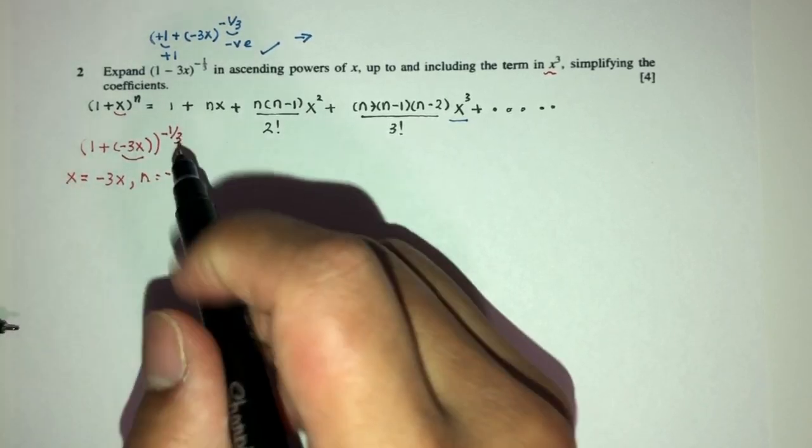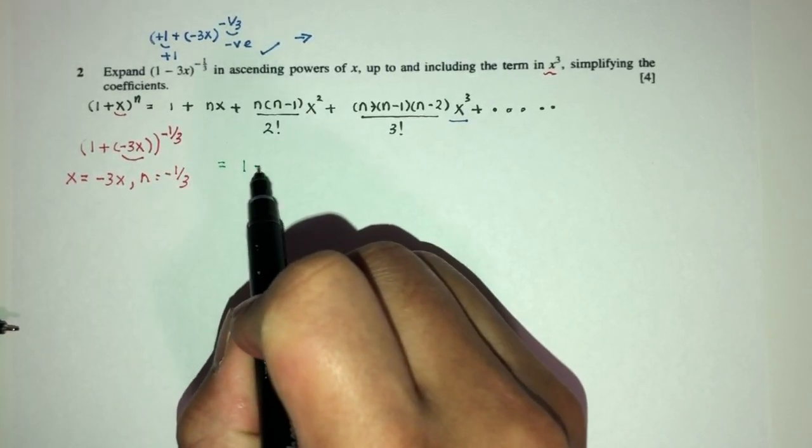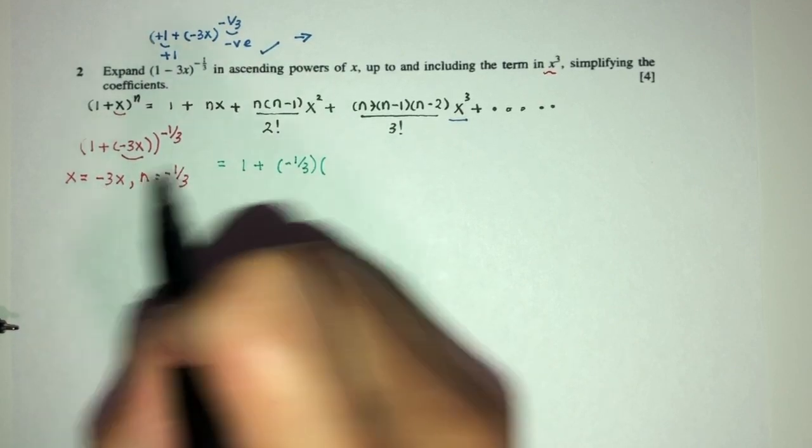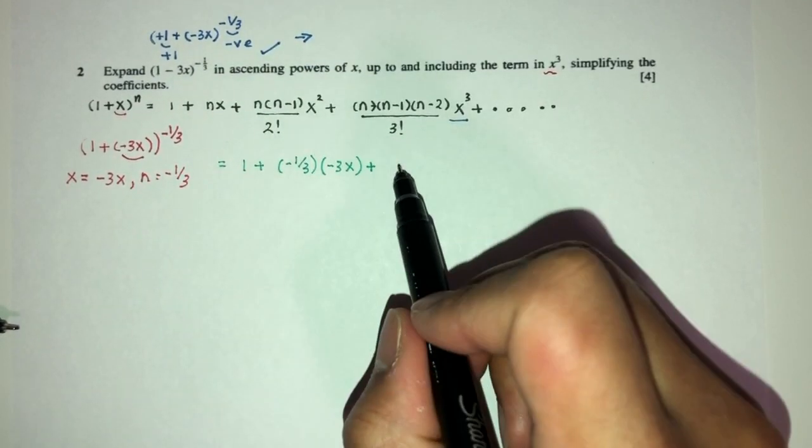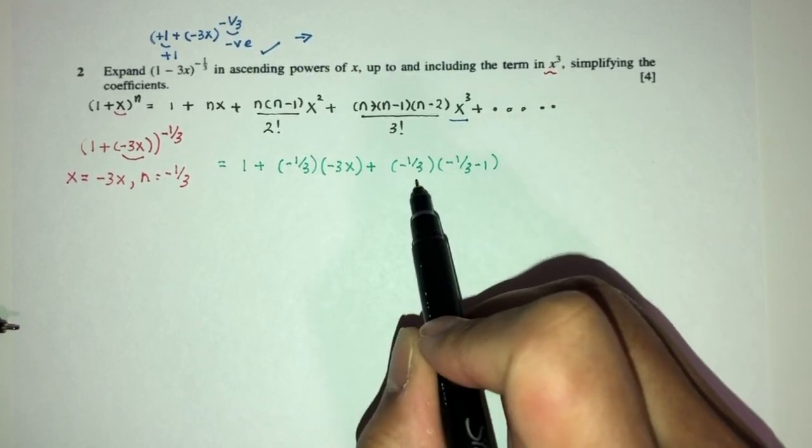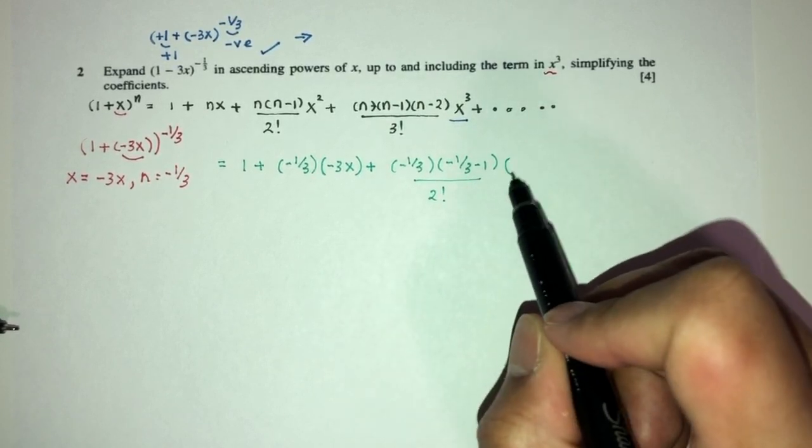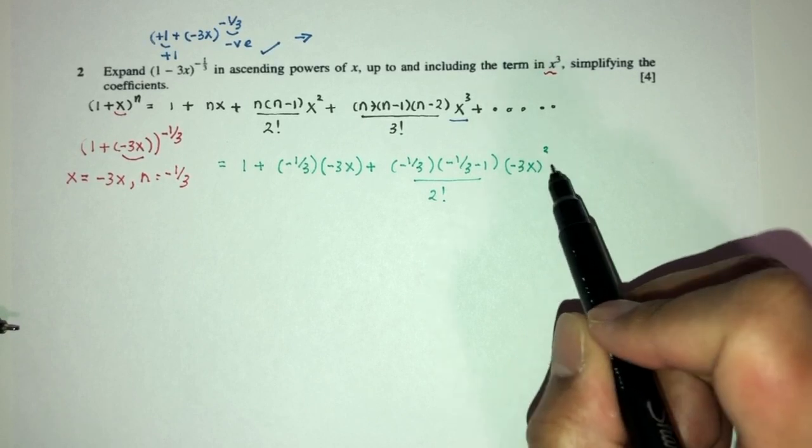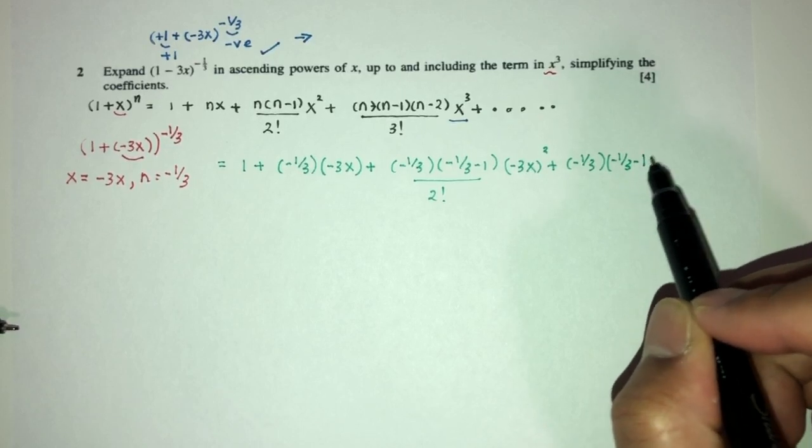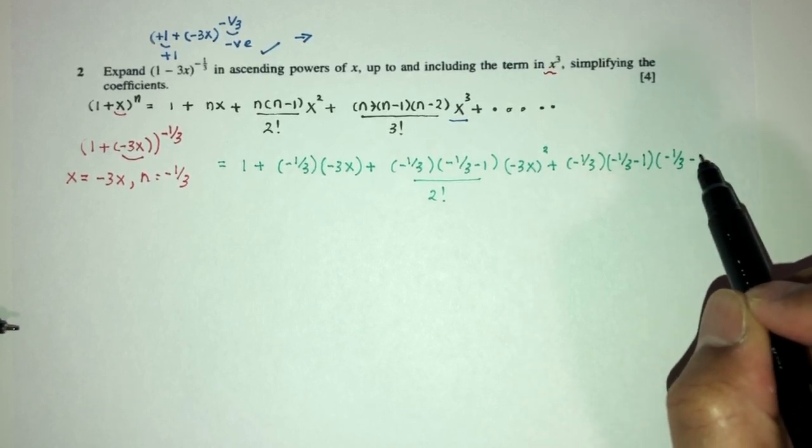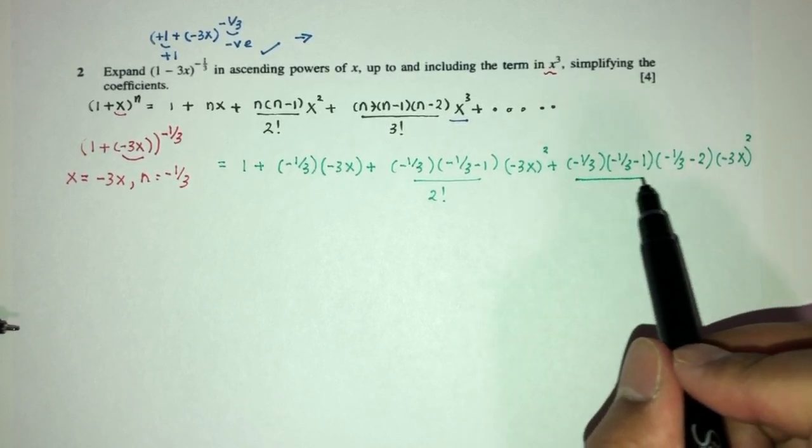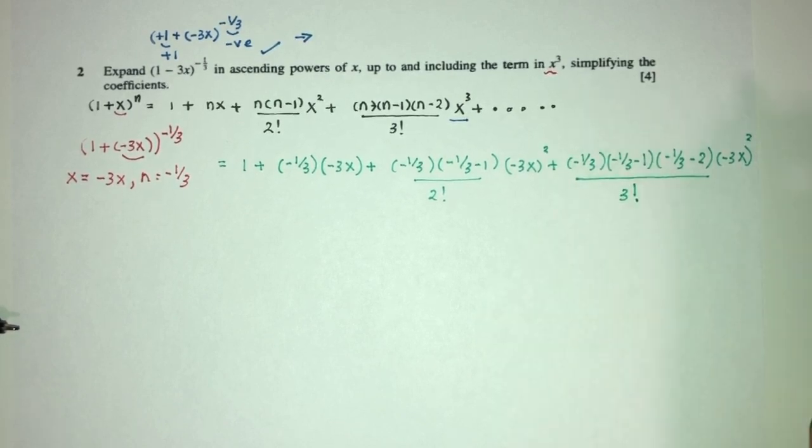So, the answer will be what? So, replace. So, the first term is just 1. That is fine. Plus, n is given to you by -1/3 times x. x is given to you by -3x. Plus, n is given to you by (-1/3)(-1/3 - 1)/2! times (-3x)² and finally, we have (-1/3)(-1/3 - 1)(-1/3 - 2) times (-3x)³ divided by 3!.